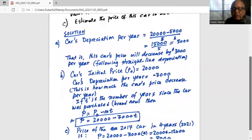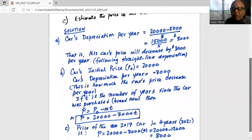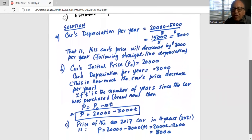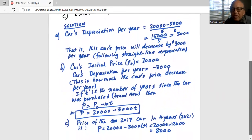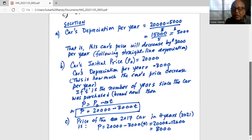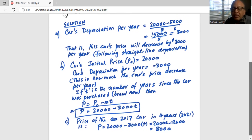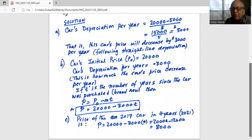Price of the 2017 car in 4 years, that is 2021, is equal to P equals $20,000 minus $3,000 multiplied by 4 years. So it is $20,000 minus 4 times $3,000, which is $12,000, equals $8,000. Hence this is the price of the car in 2021.